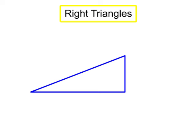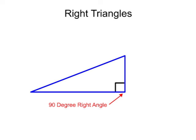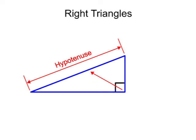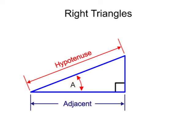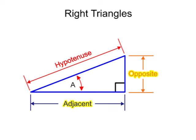A right triangle is any triangle that has one angle equal to 90 degrees, which is called the right angle. The hypotenuse is always the side across from the right angle. When discussing either of the remaining two angles in the triangle, you'll often hear the terms opposite and adjacent applied to the sides. The term adjacent identifies the side next to the angle that's not the hypotenuse, and the term opposite identifies the side across from the angle. These terms can apply to different sides depending upon the angle in question.